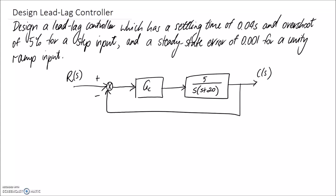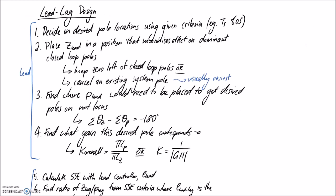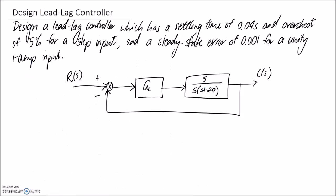In this question we're going to design a lead-lag controller for the GC block in our system, which has a settling time of 0.04 seconds, an overshoot of 5% for a step input, and a steady state error of 0.001 for a unity ramp input. I'm going to follow through the steps from the recap video for the lead-lag controller, starting with figuring out where our desired pole locations are given these criteria.